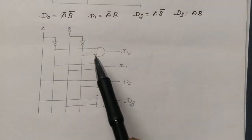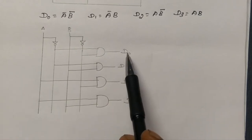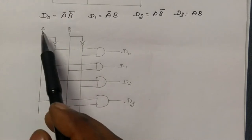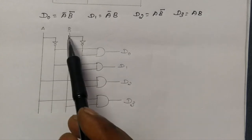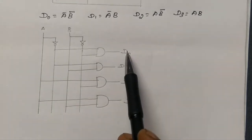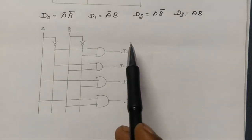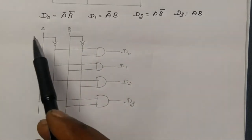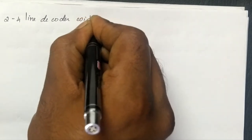In this implementation we are having some issues. The D0 output will always be equal to 1 when both inputs are 0, and also when no input is available — at that time D0 will show output as 1. To overcome this drawback, we are adding an additional input which is represented as the enable input: the 2-to-4 line decoder with enable.